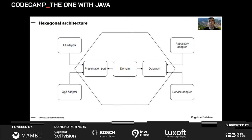Each port has one or more adapters, and you can have any number of adapters per port — they just need to implement the same contract. With this approach, we have a clear separation between business logic (contained within the domain, which makes your application different from any other) and the infrastructure — the systems you connect to. Even if your business logic remains constant, your infrastructure might change. When you shift to AWS, for example, it's going to change a lot, and if it's tightly coupled, that's not good.